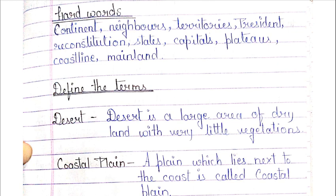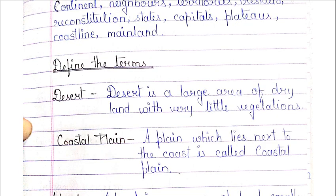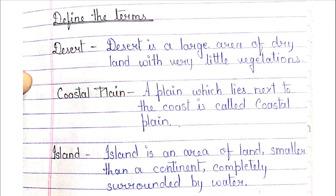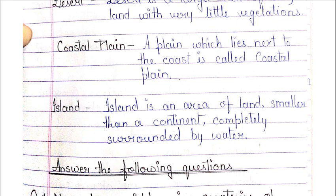Define the Terms: Desert — a large area of dry land with very little vegetation, meaning land that is very large but has very little water, making it dry with very little farming possible. Coastal Plain — a plain which lies next to the coast, meaning flat land near the sea. Island — an area of land smaller than a continent, completely surrounded by water.